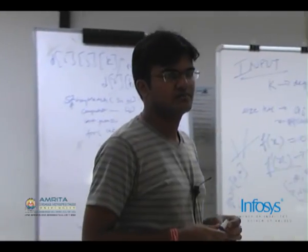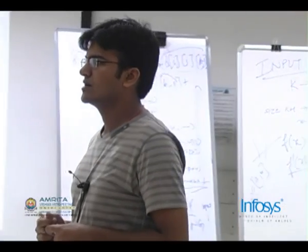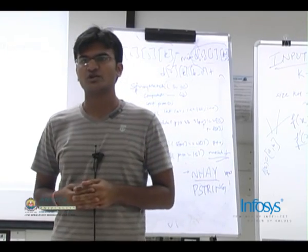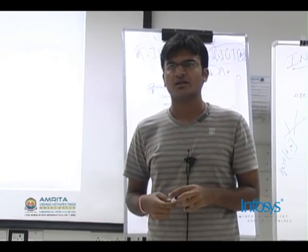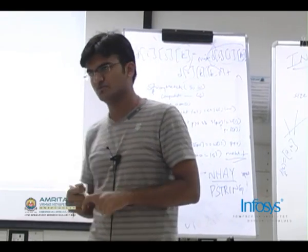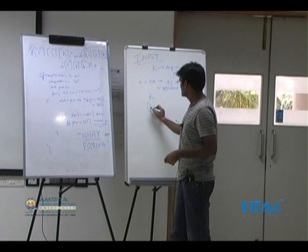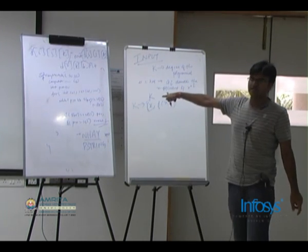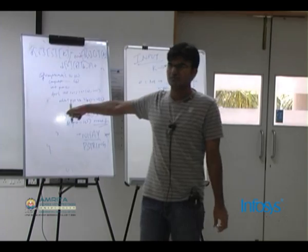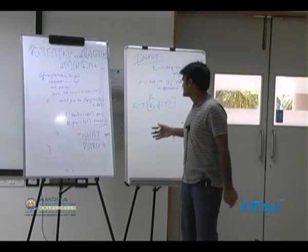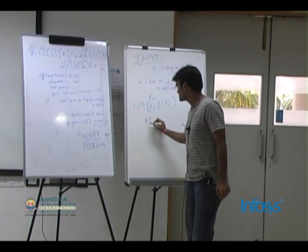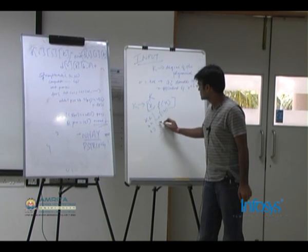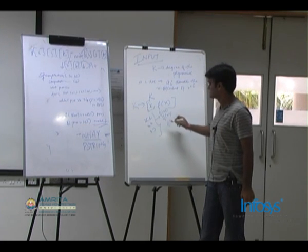Let's see one more problem. You are given a polynomial but you don't know what it is — you only know the degree n. You are given K pairs of (x, f(x)), and then given some new x values — x1, x2, x3 — and you have to report f(x1), f(x2), f(x3), and so on. This is the polynomial interpolation problem.